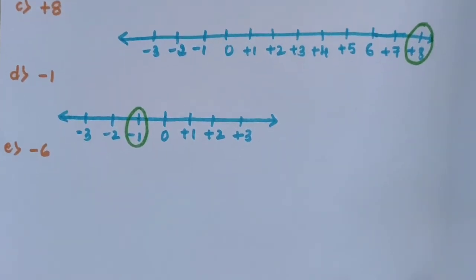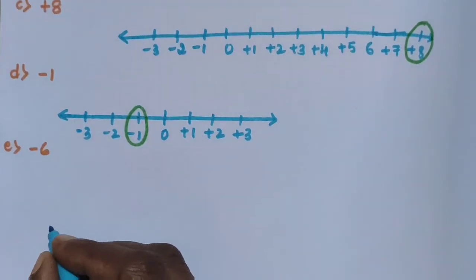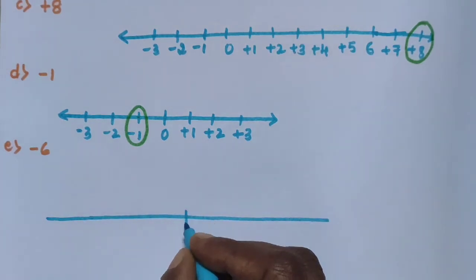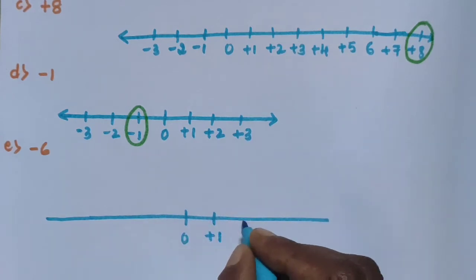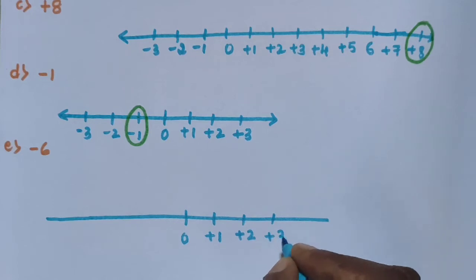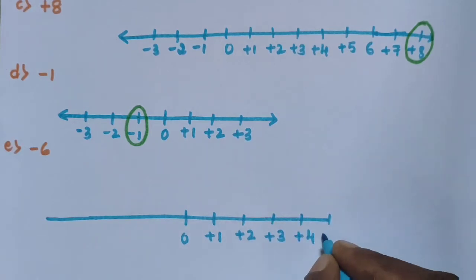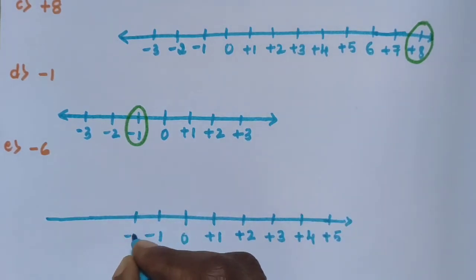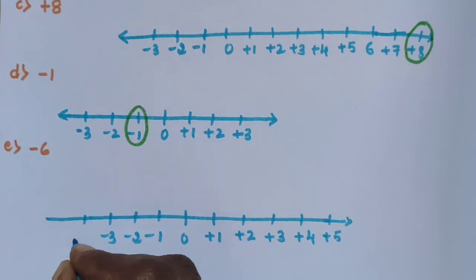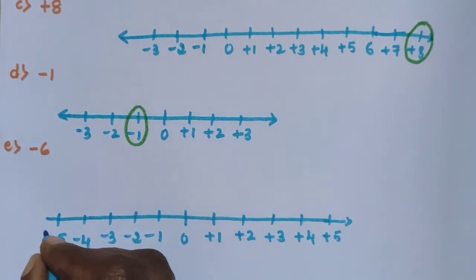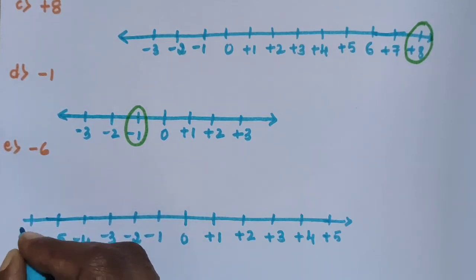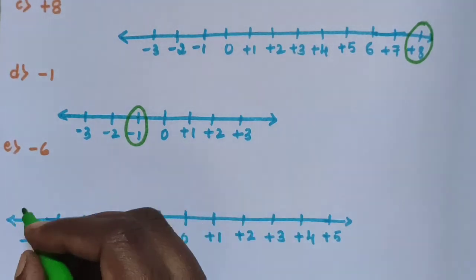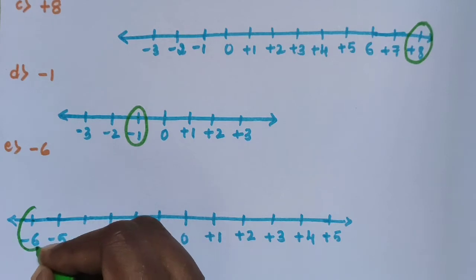Sub-question E: Minus 6. Draw the number line of integers with 0 in the center, then plus 1, plus 2, plus 3, plus 4 and so on to the right, and minus 1, minus 2, minus 3, minus 4, minus 5, minus 6 to the left. Represent minus 6 — this is minus 6.